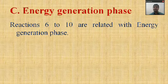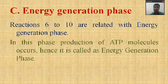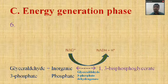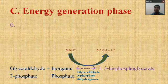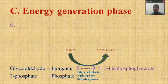Phase three is the energy generation phase; reactions six to ten are related to it. The two molecules of glyceraldehyde-3-phosphate are converted into pyruvate simultaneously through reactions six to ten, during which generation of ATP molecules occurs. In reaction six, glyceraldehyde-3-phosphate, in addition to inorganic phosphate, forms 1,3-bisphosphoglycerate — an energy-rich compound — and there occurs formation of NADH + H⁺, which enters into the electron transport chain (ETC) to generate ATP molecules.